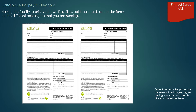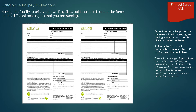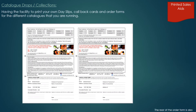Order forms may be printed for the relevant catalogue, again having your distributor details already printed on them. As the order form is not carbonated, there's a tear-off strip at the bottom for the customer to keep. They will also be getting a printed invoice from you when you deliver the goods to them, ensuring they have the full details of items purchased and your contact details for the future. Once you have printed the front side of the order form, turn the paper over and feed it back through the printer so that the rear page is printed on the back.